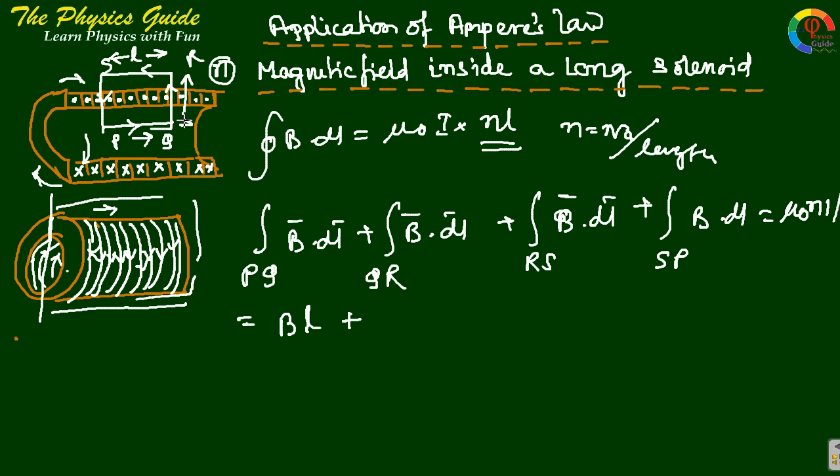For QR, B dot dL is zero because B is outside. For RS, B dot dL is also zero.